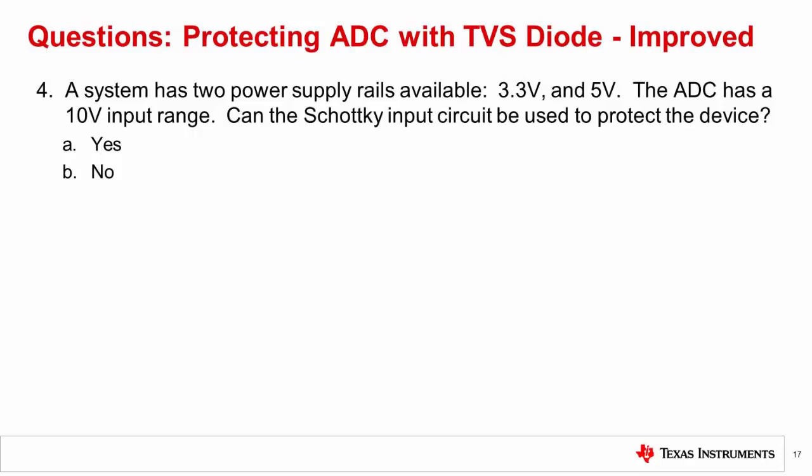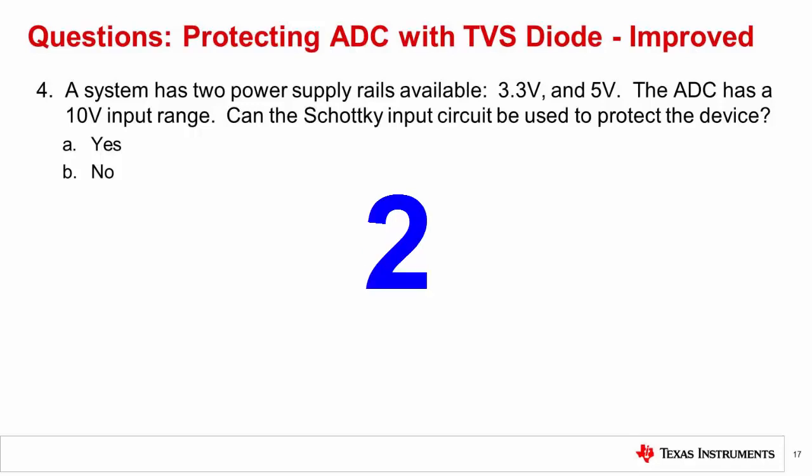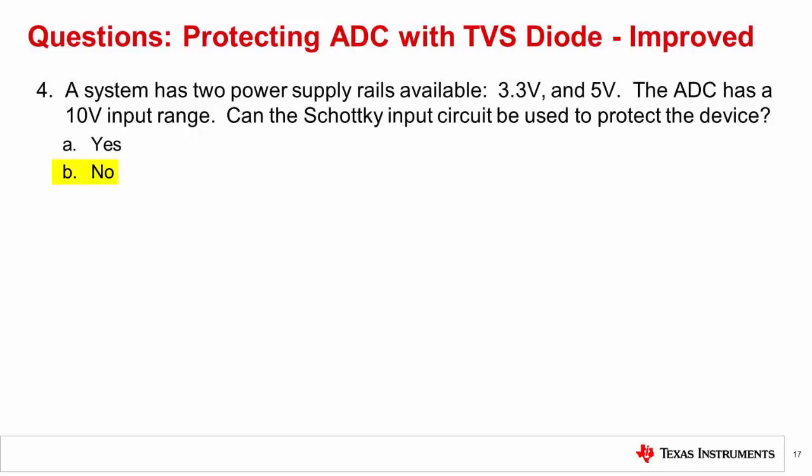Question 4: A system has two power supply rails available, 3.3 volts and 5 volts. The ADC has a 10-volt input range. Can the Schottky input circuit be used to protect the device? The correct answer is B, no. The reason is that we need a 10-volt supply to protect a 10-volt input range for Schottky type input protection. If the supply is not available, then the best alternative is to use TVS type protection.